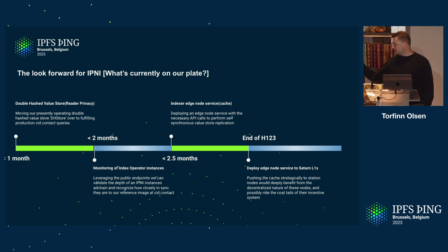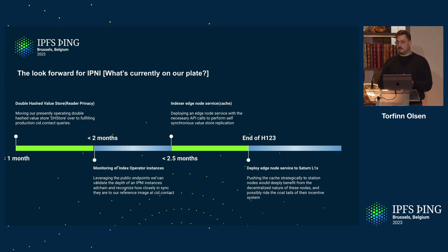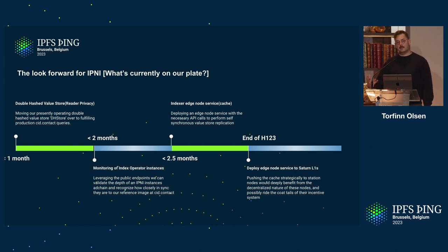For the SID.contact instance of the Interplanetary Network Indexer, we're presently working on our double hash value store — we'll get an in-depth look at that with Yvonne's talk later today. This is something we're really excited about. It presents a use case for privacy that will actually obscure what exactly people are doing on our network. We want people to have the option to choose whether or not they want their traffic essentially monitored.